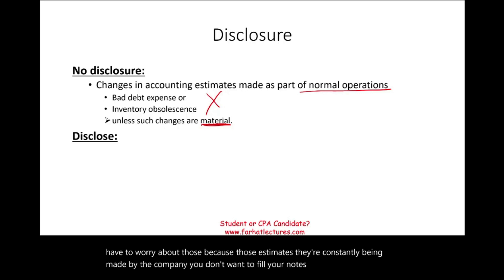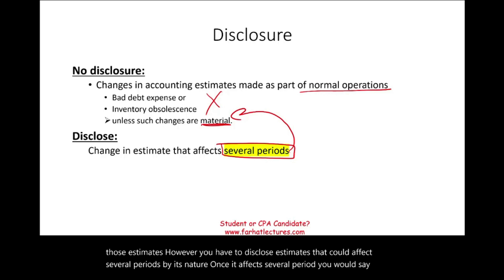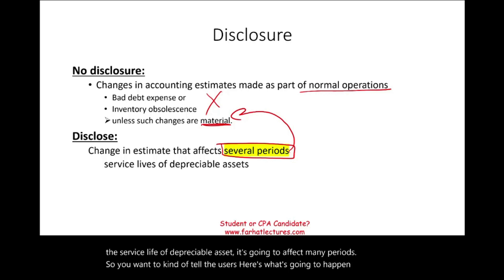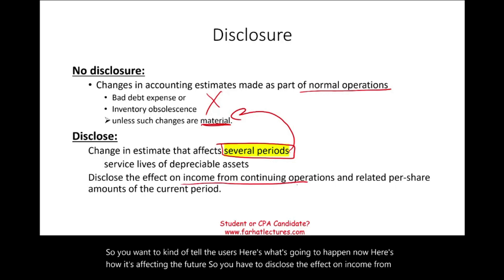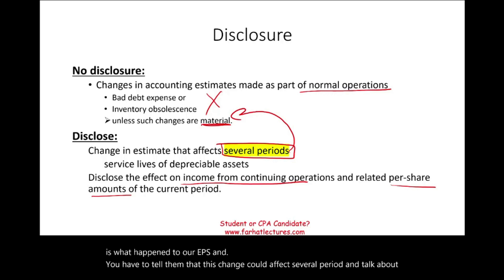However, you have to disclose estimates that could affect several periods. By nature, once it affects several periods you would consider it material. For example, the service life of depreciable assets — if you change the service life, it's going to affect many periods, so you want to tell users what's going to happen. You have to disclose the effect on income from continuing operations and any effect on earnings per share, because those amounts are important for the current period. You have to indicate that this change could affect several future periods. You could always disclose to be on the safe side, but those are the rules for disclosure when it comes to accounting estimates.